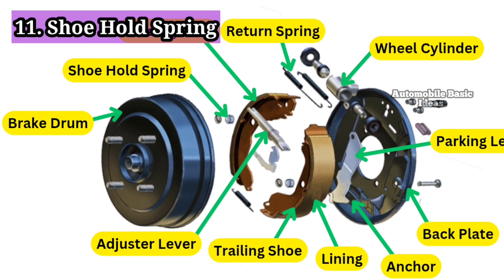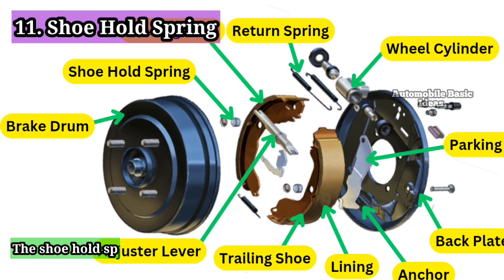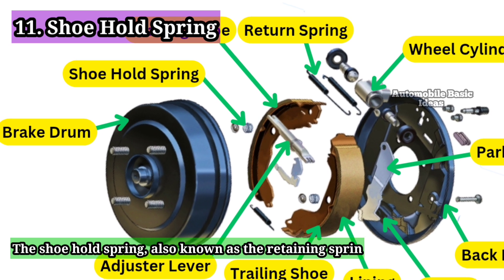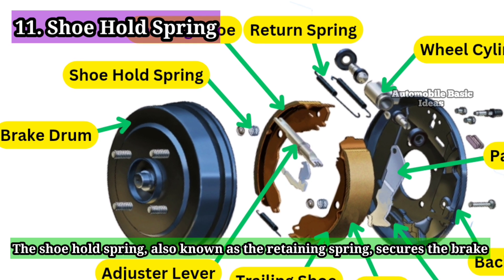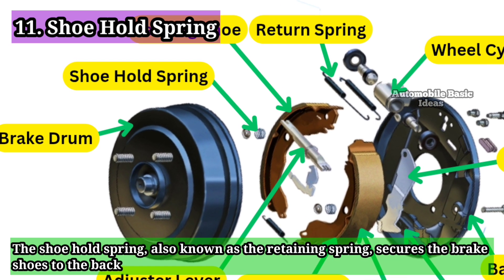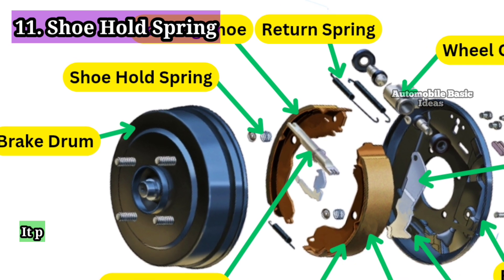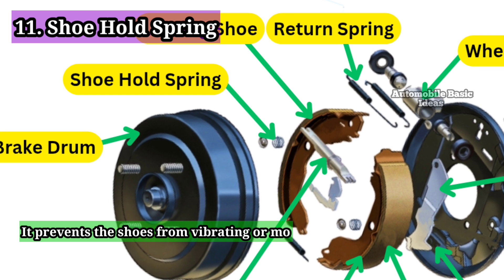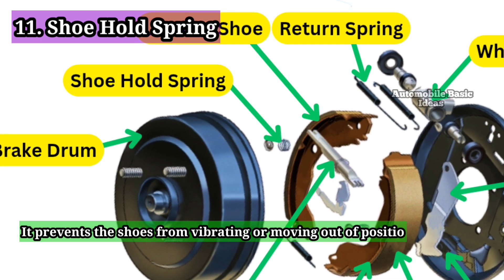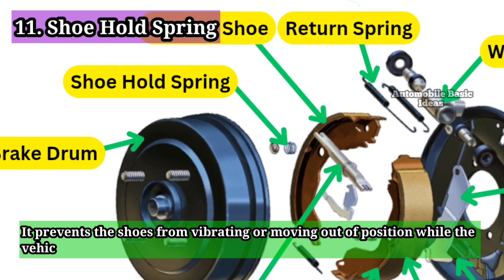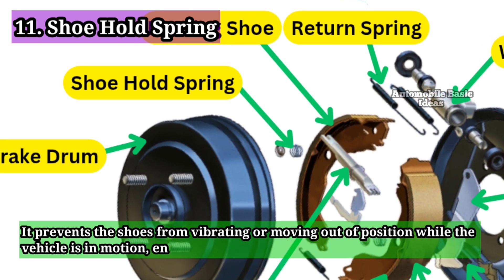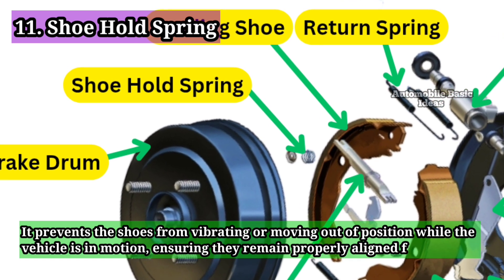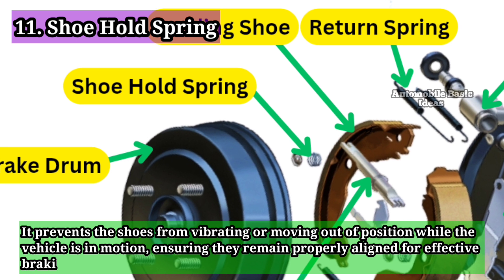11. Shoe hold spring. The shoe hold spring, also known as the retaining spring, secures the brake shoes to the back plate. It prevents the shoes from vibrating or moving out of position while the vehicle is in motion, ensuring they remain properly aligned for effective braking.